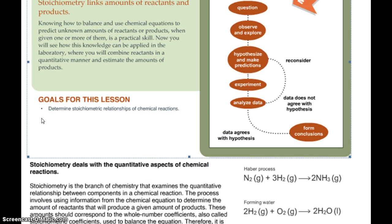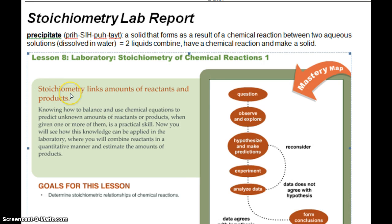So the goal is to determine stoichiometric relationships of chemical reactions and stoichiometric like stoichiometry just talks about the fact that how much do we have before a reaction has to equal how much we have after the reaction.